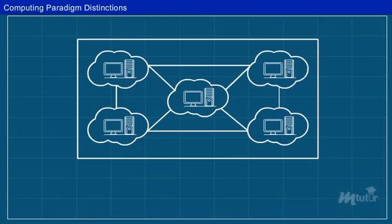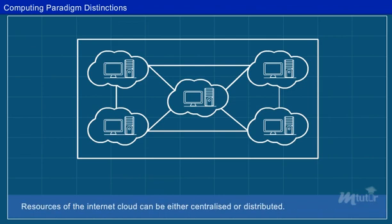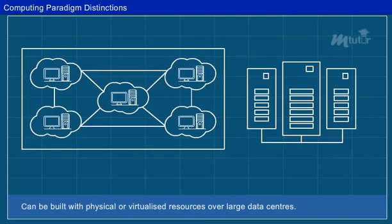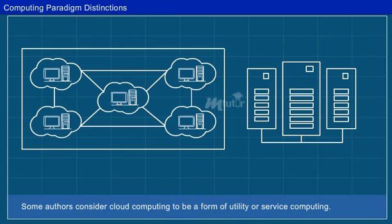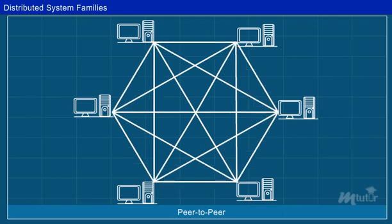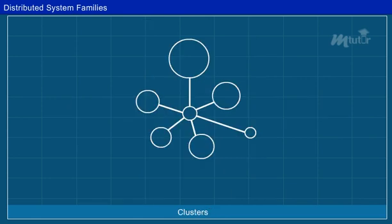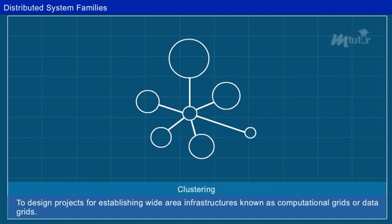Cloud computing: the resources of the Internet cloud can be either centralized or distributed. A cloud can be built with physical or virtualized resources over large data centers, and some authors consider cloud computing to be a form of utility or service computing. Since the mid-1990s, technologies for building P2P networks and networks of clusters have been consolidated to design wide-area infrastructures known as computational grids or data grids.